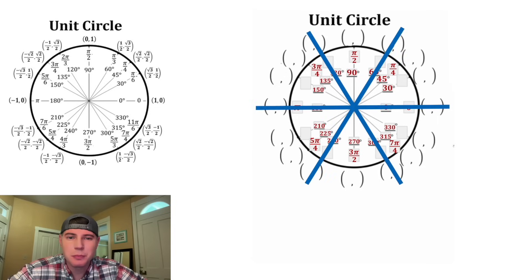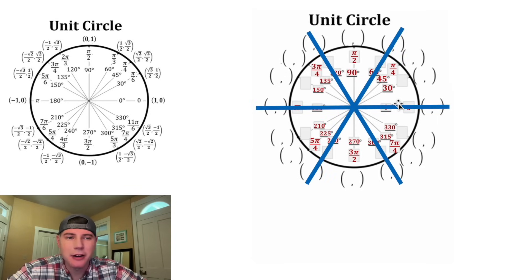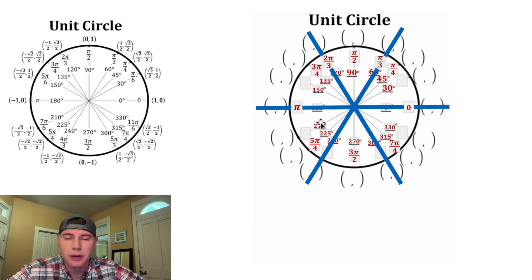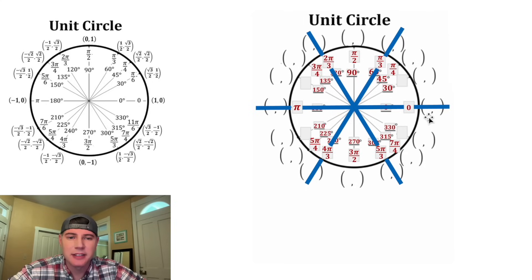Now let's split the circle into sixths. Each of these sixths represents pi over 3. So we have zero, then pi over 3, then 2 pi over 3, then 3 pi over 3, which simplifies to pi. Then 4 pi over 3, 5 pi over 3, and then 6 pi over 3, which is 2 pi.